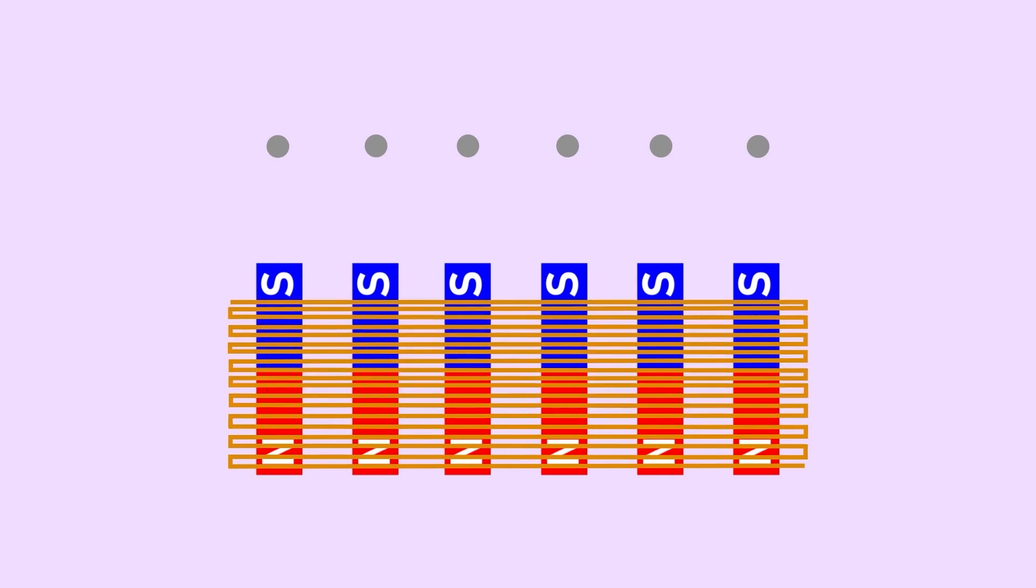Together, these create a small inductive sensor, which is a device created by applying Faraday's Law that will generate an electric current when the magnetic field going through it changes.